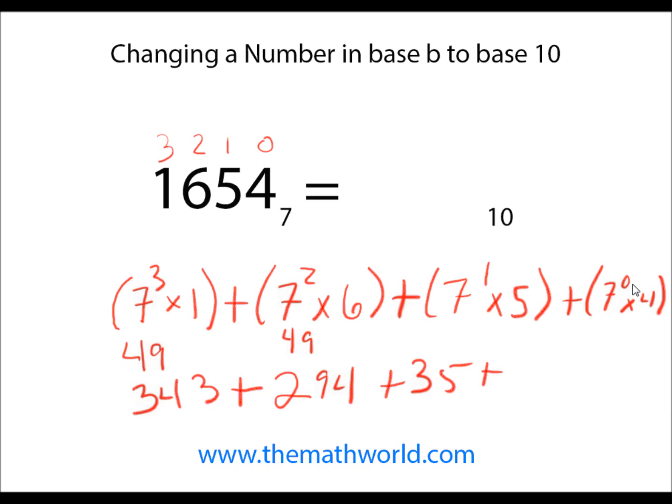And then 7 to the 0th power is 1, so 1 times 4 is 4. And when you add all of these up, you get 676, so 1654 base 7 is equal to 676 base 10.